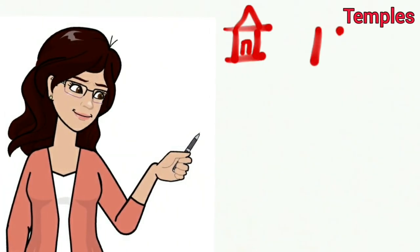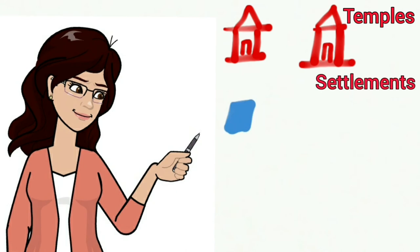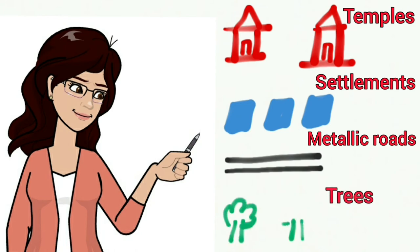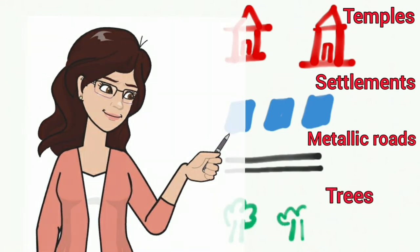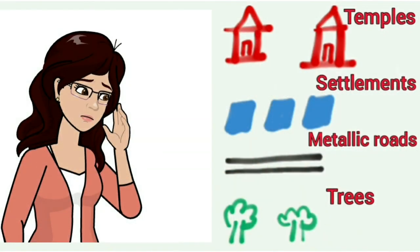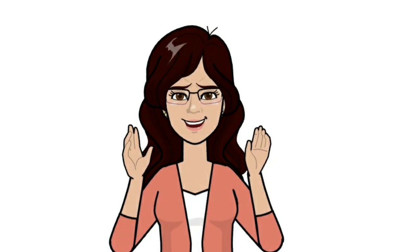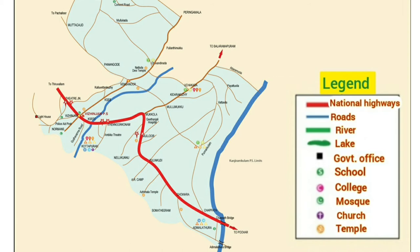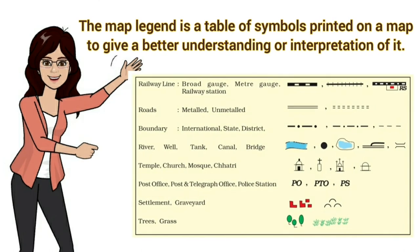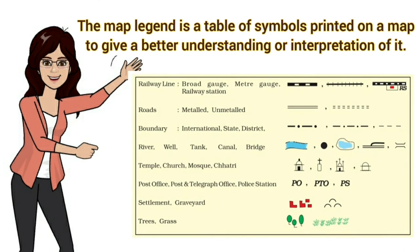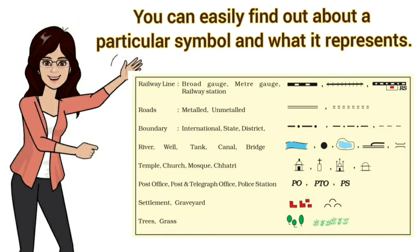Let us look at some of the conventional signs and symbols which are very common in use. This sign stands for temples, this one is used for settlements, this sign is for metallic roads, and this is for trees. You don't need to memorize all of them, because on the map you can find the key of the map, also called the map legend. The map legend is a table of symbols printed on a map to give a better understanding or interpretation of it. With the help of this table, you can easily find out about a particular symbol and what it represents.